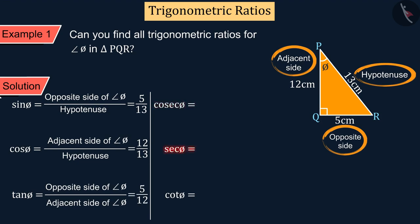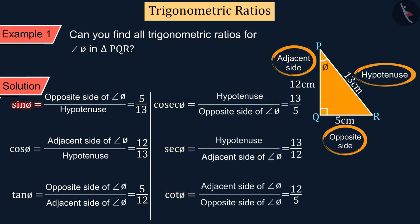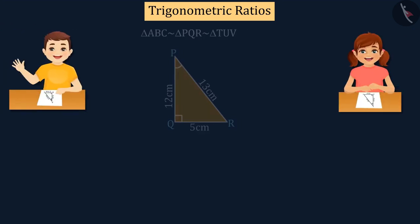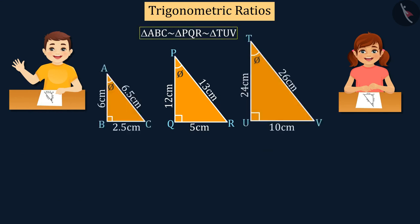Also, we learned that cosec, sec, and cot are the reciprocal of sine, cos, and tan. In this way, we write all the trigonometric ratios for the angle θ in the triangle PQR.